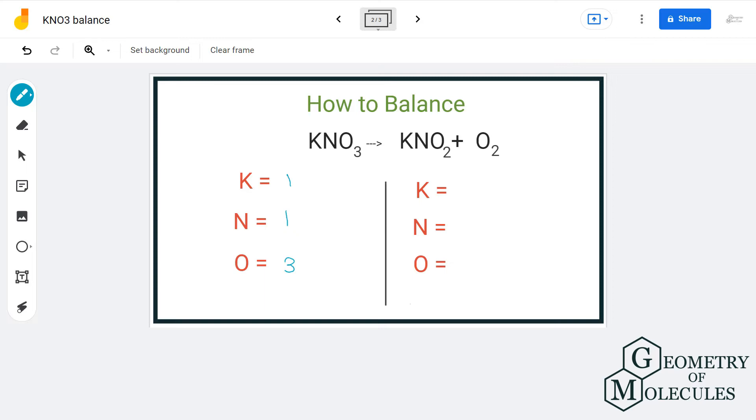On the product side we have one potassium, one nitrogen, and four oxygen atoms. We have three oxygen on the reactant side and two plus two, that is equal to four, on the product side.